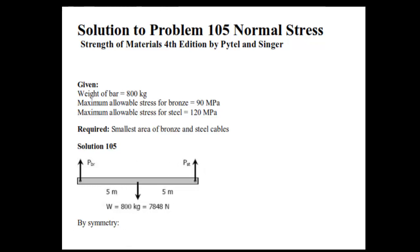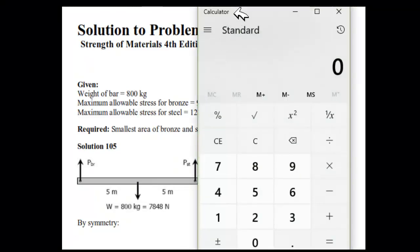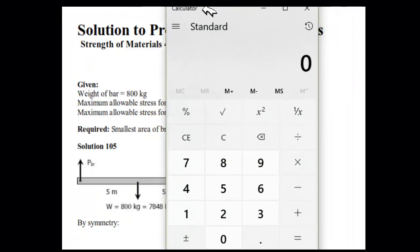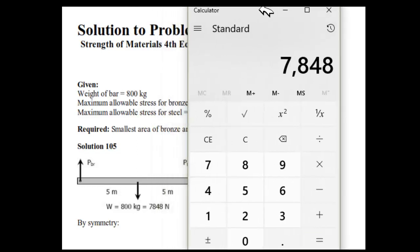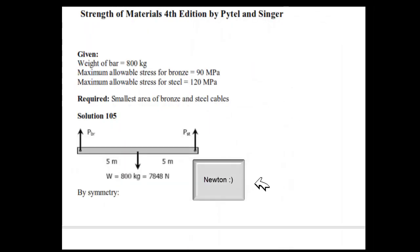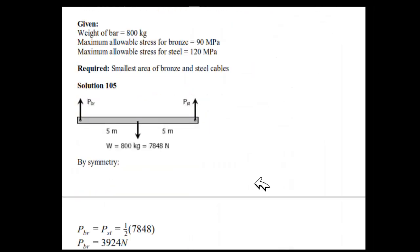First we need to convert this 800 kg into Newtons, and you know that just multiply it by 9.81. Let me do it for you: that is 800 times 9.81 which equals 7848 Newtons.